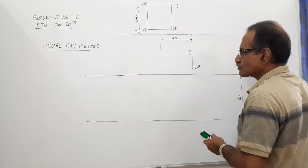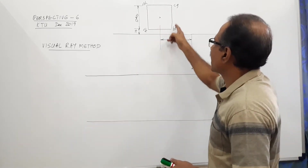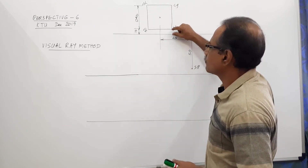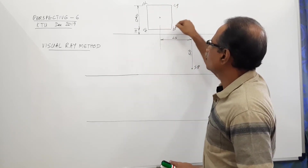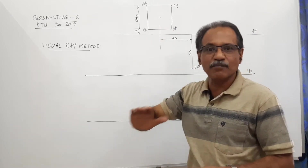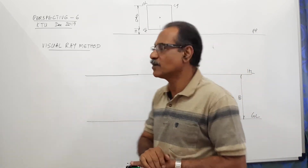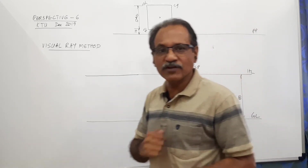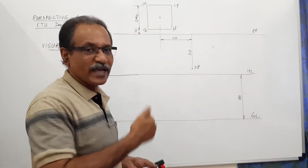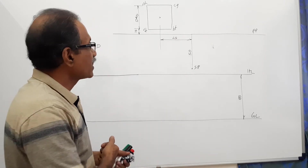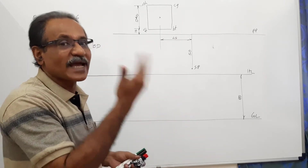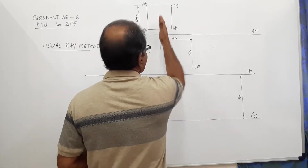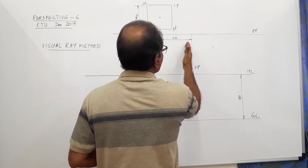I have drawn the picture plane and the plan of the square prism as a square ABCD, 10mm behind the picture plane, 40mm square. The height is not visible in the plan. The station point is 50mm in front of PP and 45mm to the right of the axis, so draw a vertical line at the center and measure 45mm to the right.